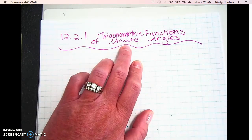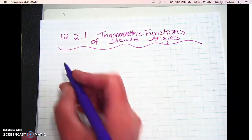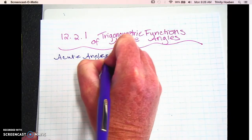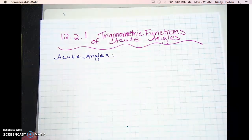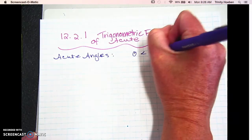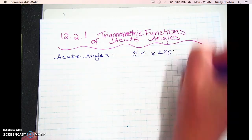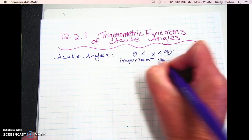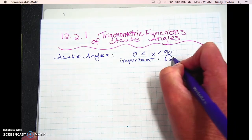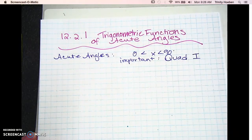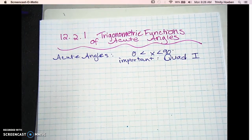The main thing we're going to talk about today is acute angles. Anybody know or remember from geometry, acute angles? Acute angles are under 90 degrees — they're between 0 and 90 degrees. Why is this important in Algebra 2? Because it puts it in a certain quadrant. Which quadrant? First quadrant. So any acute angle should end up in quadrant 1.